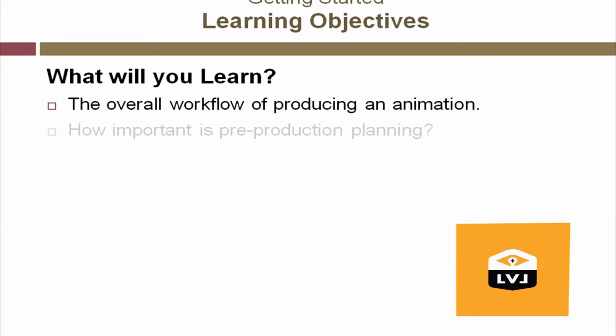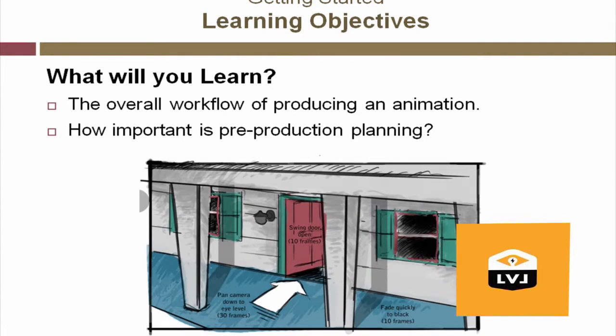Pre-production planning is a very important aspect of the overall process of 3D animation production. During this phase, sketches are created for the client so the client is able to sign off on the project prior to any production work. This sketch is called a storyboard. It outlines just what is expected of the animation, so that everyone understands what the final product should look like.